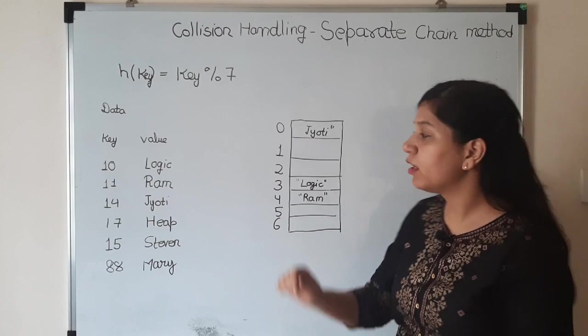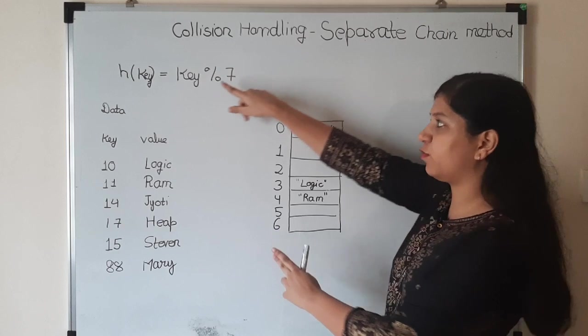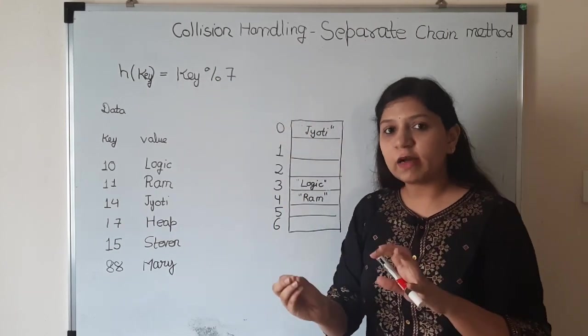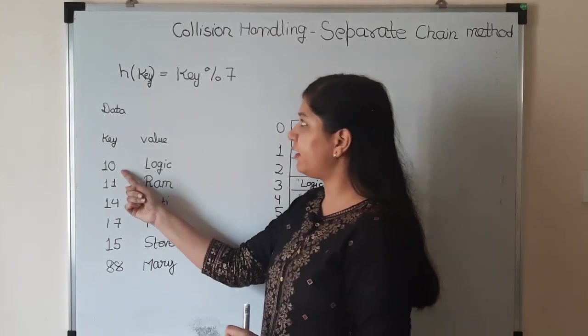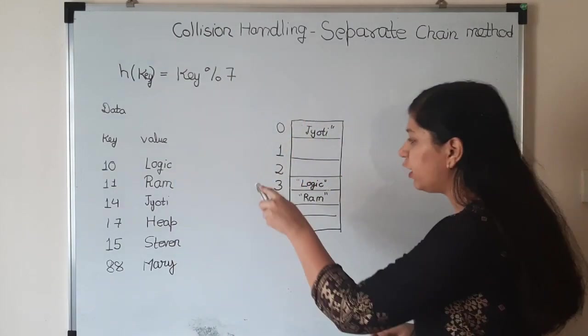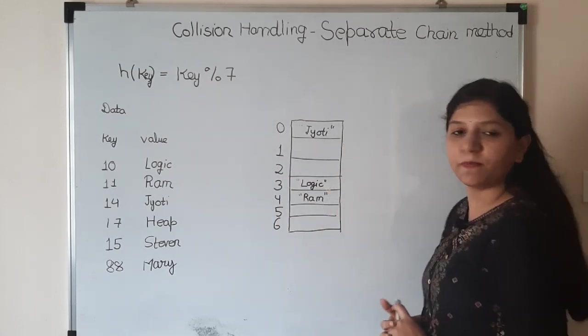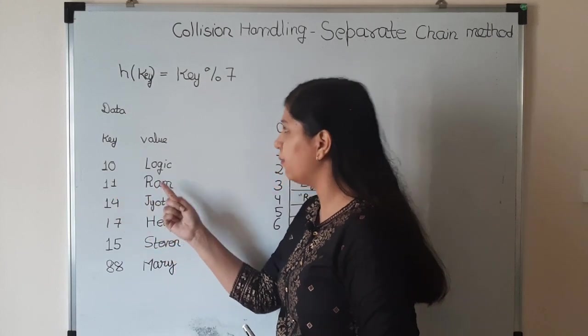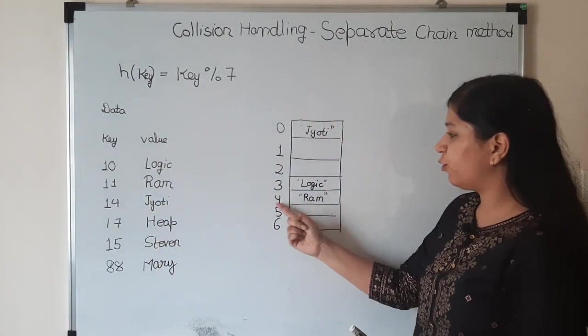Here the hash function we are using is key modulo 7. Whatever the keys are, when we use the hash function, this will be a fixed range from 0 to 6. Suppose we give 10 here, so 10 modulo 7 is 3. We'll go to 3 and put the value here - it's Logic.